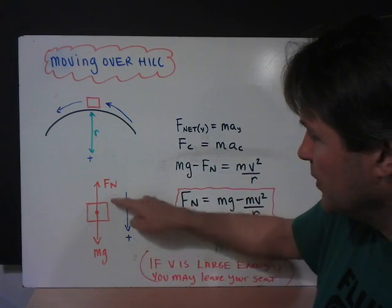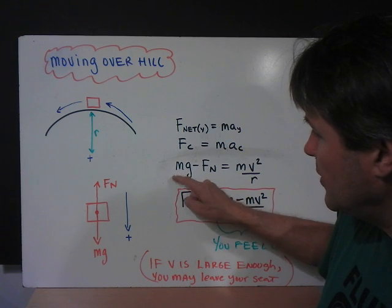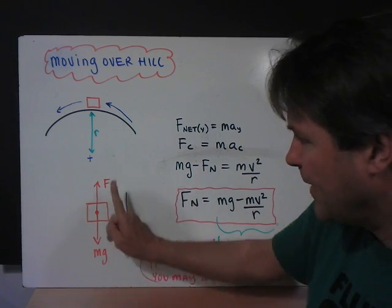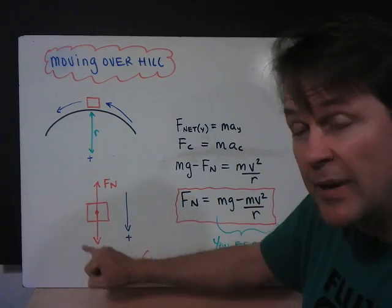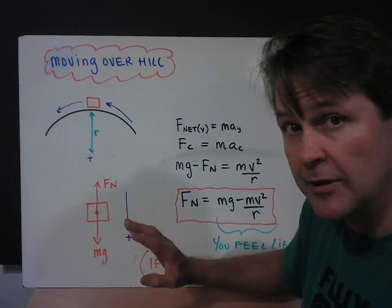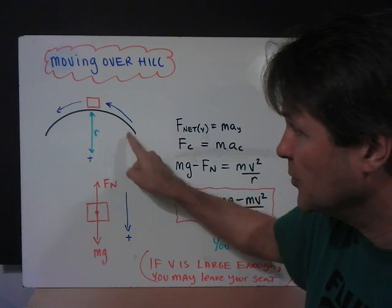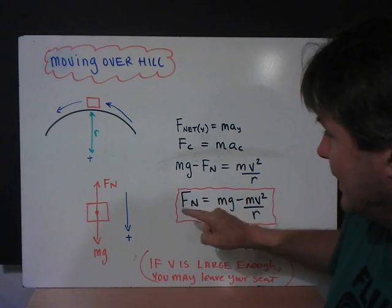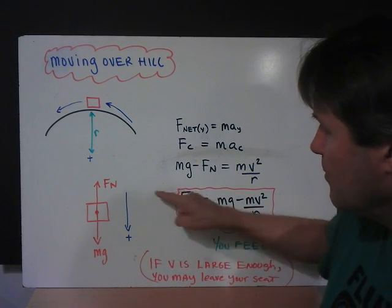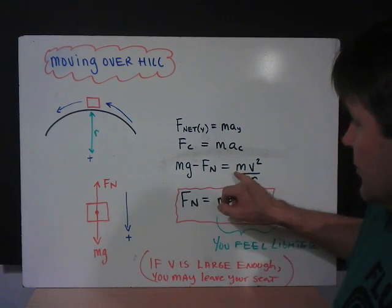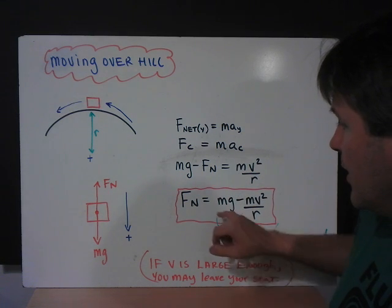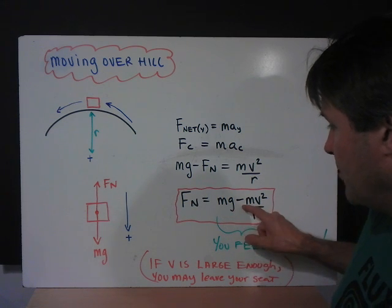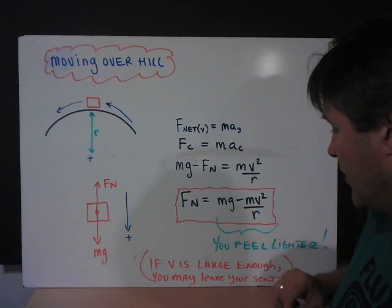These two forces work together. We have mg, which is in the positive direction, minus fn. Fn is in the negative direction, the way we have it drawn here. It's a little unusual, but that's because we're dealing with a circle. The center of the circle is the positive direction. So again, we have mg minus fn is equal to mv squared divided by r. Our final formula will be fn is equal to your weight minus mv squared divided by r.